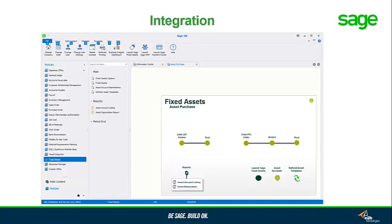Out of the box, the SAGE fixed asset solution integrates with our ERP systems such as SAGE 100, where you can launch the SAGE fixed asset module from within SAGE 100. You can create a visual workflow where during the accounts payable or purchase order process, it can automatically create assets in the depreciation module. For journal entries, SAGE 100 pulls that data directly from the SAGE fixed asset depreciation module — no need to manually export and import journal entries.